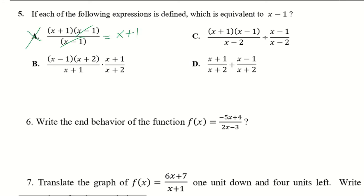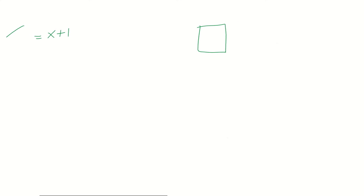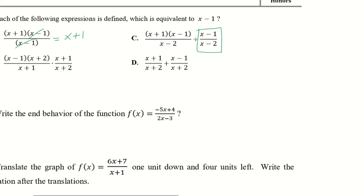Let's check c, which uses division. The x minus 1 over x minus 2 is multiplied by the reciprocal x minus 2 over x minus 1. The x minus 2s cancel and the x minus 1s cancel, leaving x plus 1 again — not what we're looking for, so it can't be c.